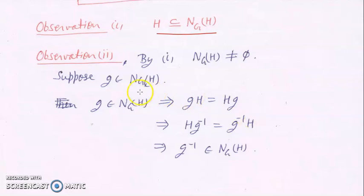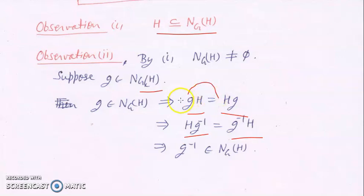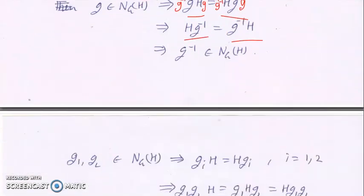Take an element g in the normalizer of H. Then gH = Hg. Multiplying by g⁻¹ on both sides gives g⁻¹H = Hg⁻¹, which simply means that g⁻¹ belongs to the normalizer of H. So the normalizer is closed under inverses.